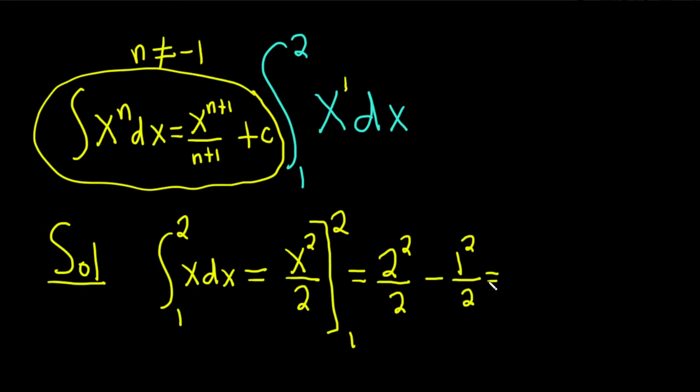2 squared is 4, so we get 4 over 2. 1 squared is 1, so we get 1 over 2. So we get 4 over 2 minus 1 over 2, which is 3 over 2.